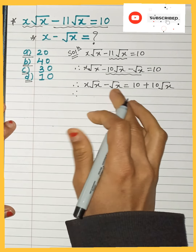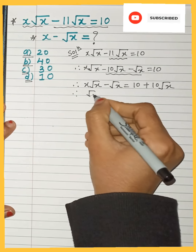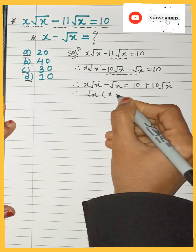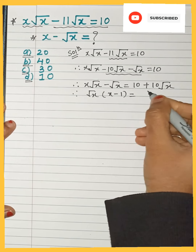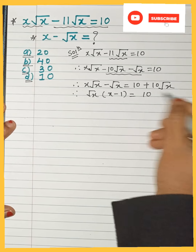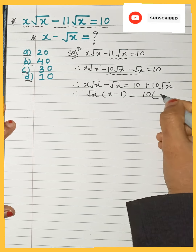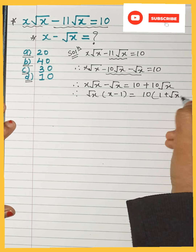From the left side we can take out √x as a common factor, leaving (x − 1) inside the bracket. From the right side we take out 10 as common, leaving (1 + √x) inside the bracket.